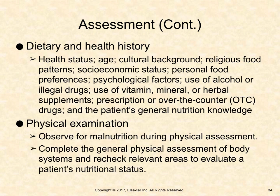The diet history focuses on a patient's habitual intake of foods and liquids and includes information about preferences, allergies, and the patient's ability to obtain food. A health history includes assessment of health status, age, cultural background, religious food patterns, socioeconomic status, personal food preferences, psychological factors, use of alcohol or illegal drugs, use of vitamin, mineral, or herbal supplements, prescription or OTC drugs, and general nutrition knowledge. A general physical assessment of body systems should be performed to evaluate nutritional status.